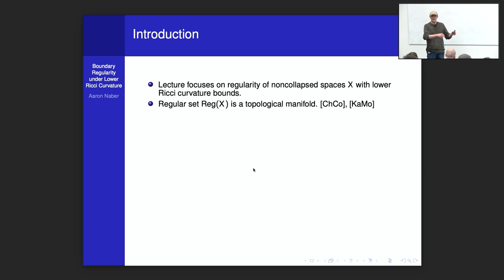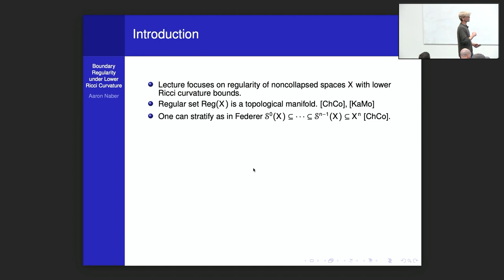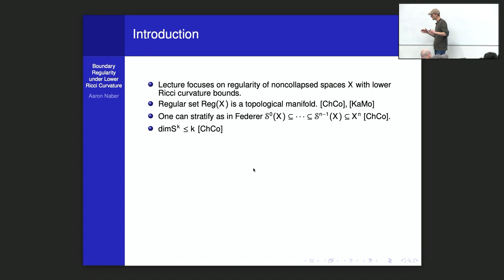Going back to the work of Cheeger and Colding, one can stratify the singular part in the spirit of Federer — you rip it into pieces based on how singular it is and study them individually. One can prove that the dimension of the k-th stratum of the singular set is bounded by k. I'll define that more carefully later.